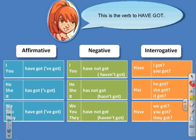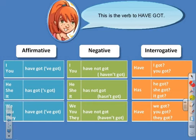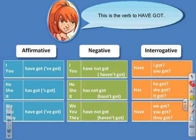Negative — what does negative mean? Negative means to add 'not' after 'have' or 'has.' I have not got — short form: I haven't got. You have not got / you haven't got. He has not got / he hasn't got. She has not got / she hasn't got. It has not got / it hasn't got. We have not got / we haven't got. You have not got / you haven't got. They have not got / they haven't got. Don't forget: negative means to add 'not' after 'has' or 'have.'